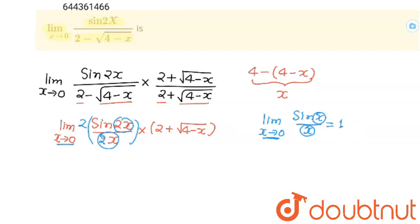So this limit will become 1, 2 into 1 into x tends to 0 for this, this will become 2 plus square root 4 which is 2. This is 4 into 2.